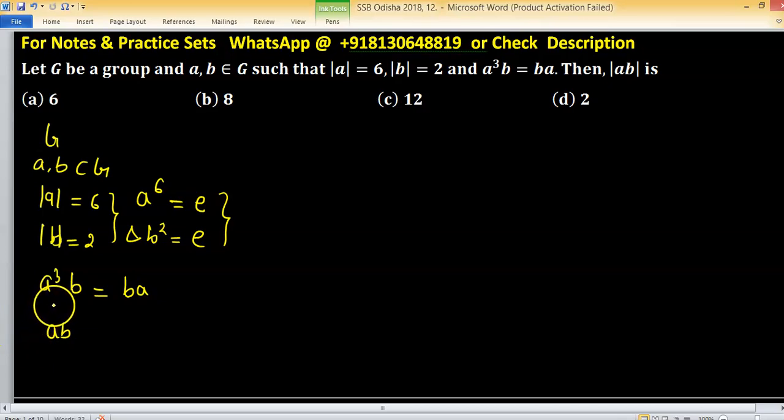So 6, 8, 12 and 2. So there is no need to check other numbers because order of ab will be one of these four.